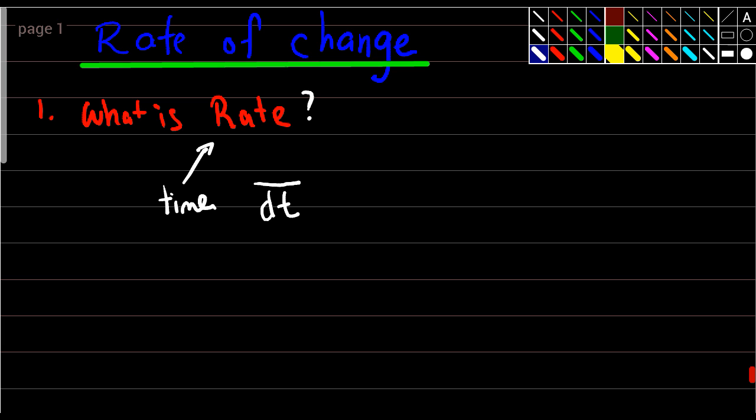So for example, if I say I have in this question, right, it says the length increasing at a rate of 5 mm per second. So length increase at a rate of 5 mm per second. Now my question to you is, what is this?